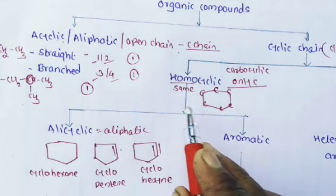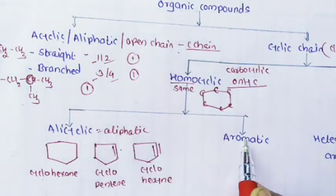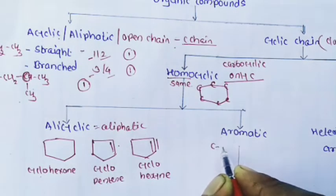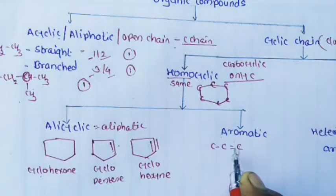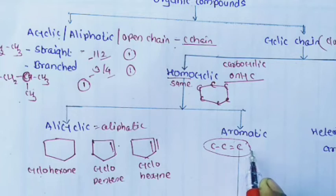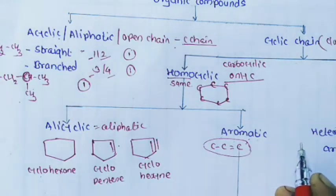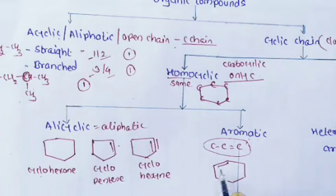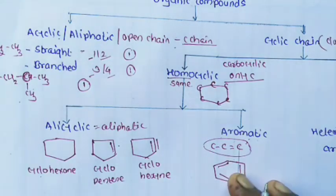The second classification of homocyclic compound is the aromatic compound. This aromatic compound has special stability because the ring is made up of alternating carbon-carbon single and carbon-carbon double bonds. This cyclic compound with alternating single and double bonds is called an aromatic compound.